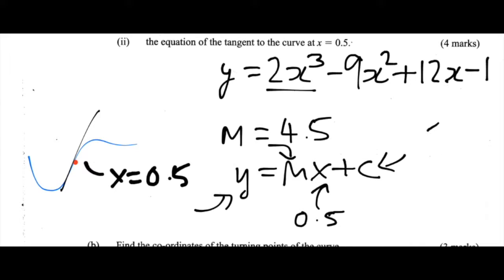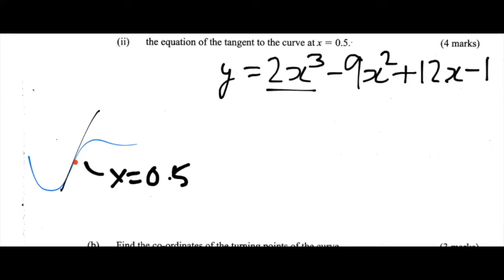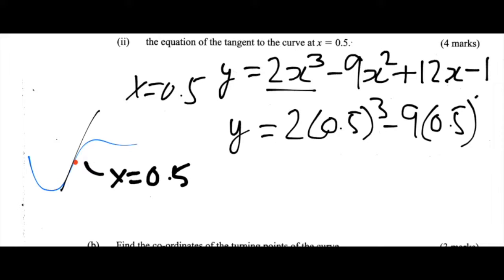We can get y by substituting x for 0.5 in this equation for the curve. So let's do that. So y, when x is equal to 0.5, is equal to 2 times by 0.5 cubed minus 9 times by 0.5 squared plus 12 times by 0.5 minus 1. And what does that give us? That gives us 0.75.